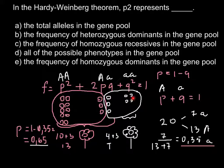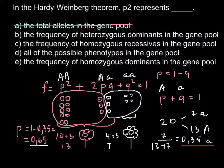Answer A: the total alleles in the gene pool. As you see, p-squared stands only for a portion of the alleles — not even all dominant alleles, only the homozygous dominant. So this is incorrect; we cross it out. Answer B: the frequency of the heterozygous dominant in the gene pool. The heterozygous would express the dominant phenotype, but this is also an incorrect answer, so we cross it out.